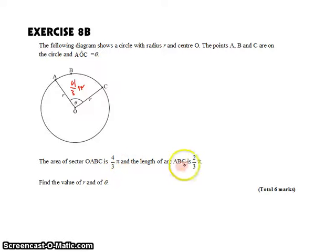We're also told that the length of the arc A, B, C is 2 thirds of pi. So this length is 2 thirds of pi. We want to use this information to find the value of R and theta, the value of the radius and theta.